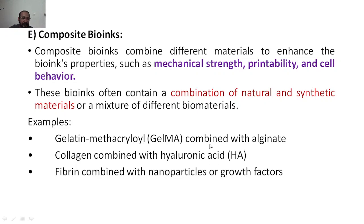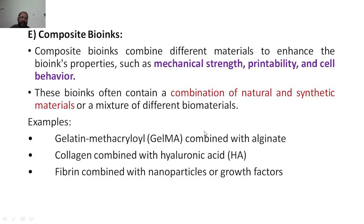For example, gelatin is a natural material, whereas methacryloyl is a synthetic material — so gelatin methacryloyl is a composite. Similarly, alginate combined with collagen, collagen combined with hyaluronic acid, and fibrin combined with nanoparticles or a growth factor are further examples of composite bioinks.